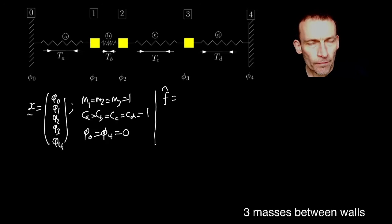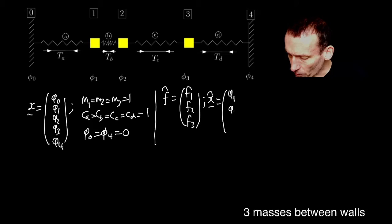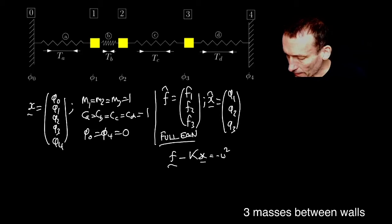Instead of the full vector of external forces, I'm just going to look at the external forces on nodes 1, 2, and 3. And then I'm going to define x̂ to be just the displacements of nodes 1, 2, and 3, masses 1, 2, and 3. And then what I'm going to end up solving is, of course, the full equation would be f minus the full Laplacian, weighted Laplacian,